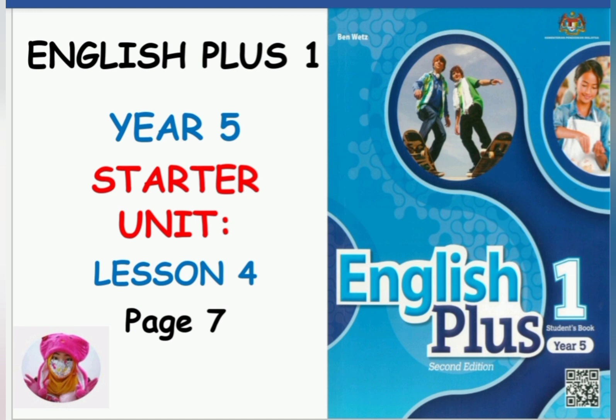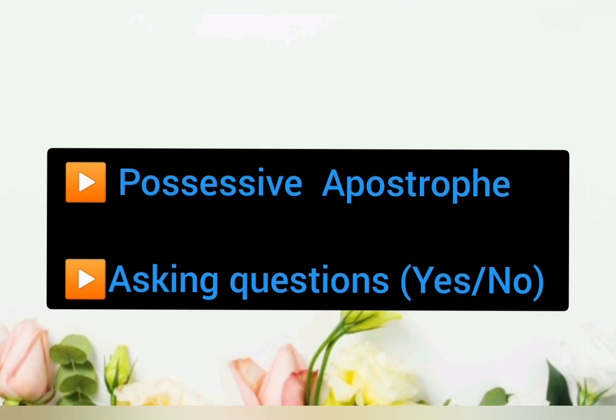Today we are going to learn Year 5 starter unit and we shall continue on Lesson 4, which will be on page 7. To those who are not Year 5 students, don't run away please, because we are going to learn possessive apostrophe and also asking questions — yes and no. Are you ready? Let's go.